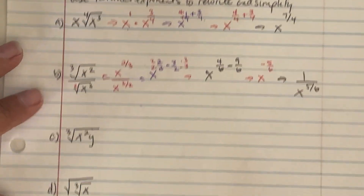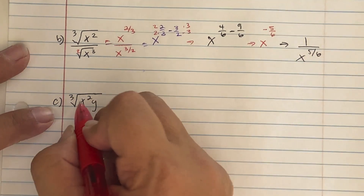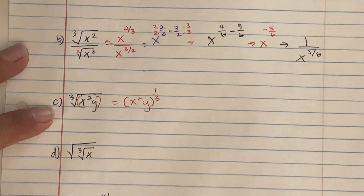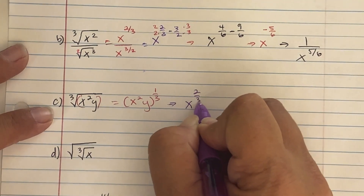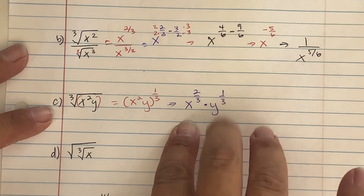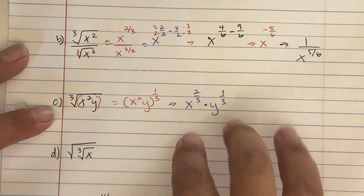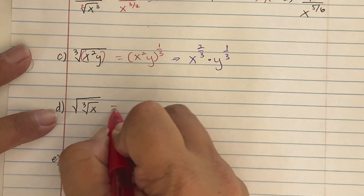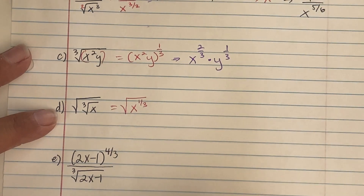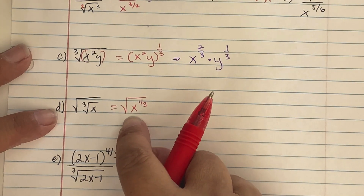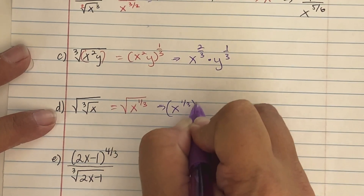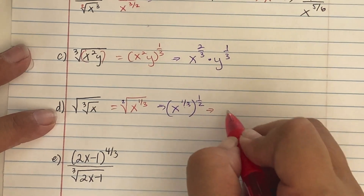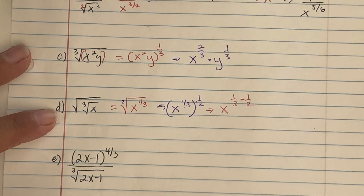On C: cube root of x squared y. Anything inside the radical is one piece, so rewrite as x squared y raised to the 1 third power. Applying the power rule: x to the 2 thirds times y to the 1 third. Since the bases are different, they stay as is. On D: square root of the cube root of x. Rewrite as the square root of x to the 1 third — then x to the 1 third raised to the 1 half power. Applying the power rule, exponents multiply: x to the 1 sixth.